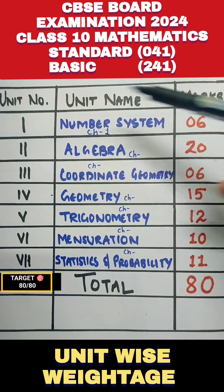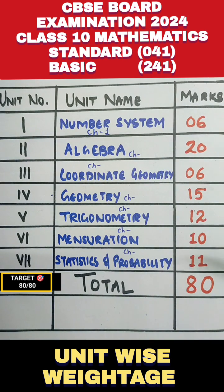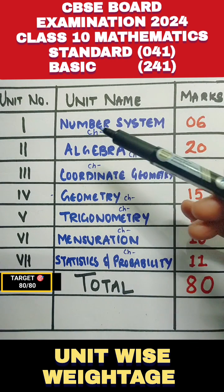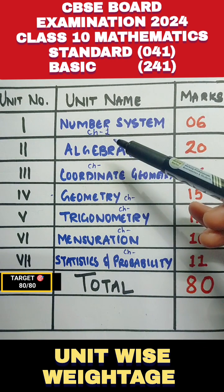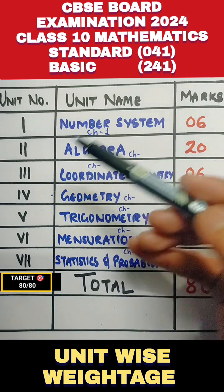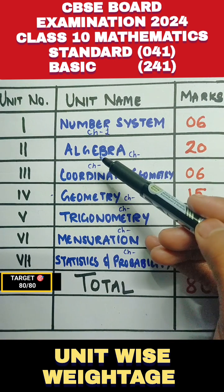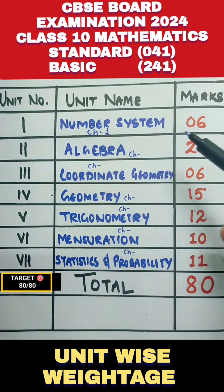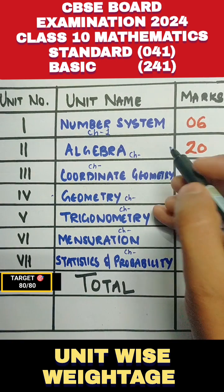Chapter 1, that is Number Systems, will come for 6 marks in your board paper. Algebra is the second unit, which is 20 marks. In your algebra unit, Chapter 2 is Polynomials, Chapter 3 is Linear Equations in Two Variables, Chapter 4 is Quadratic Equations, and Chapter 5 is Arithmetic Progressions.